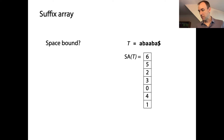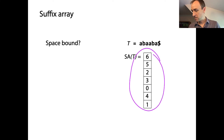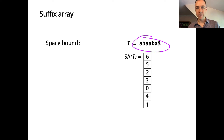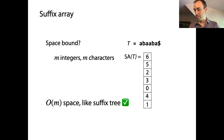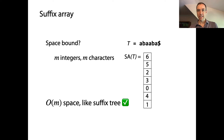Let's compare the suffix array to the suffix tree in terms of space. What are we storing? We're storing m integers in the array — m offsets — and we're storing m characters for T. That's all we're storing. Pretty clearly, that's big O of m, just like the suffix tree. For the suffix tree, when you add up nodes, edges, labels, and suffix links, you also get big O of m. Here with the suffix array, it's quite clear and easy to see that we also have a big O of m data structure.